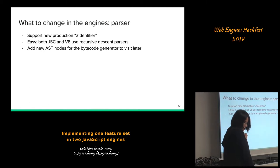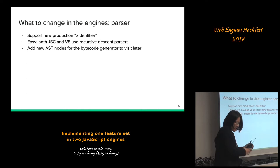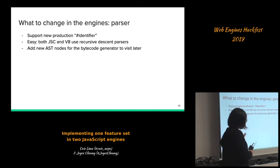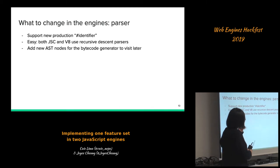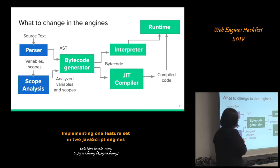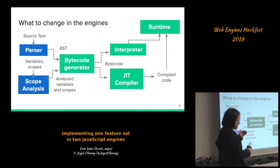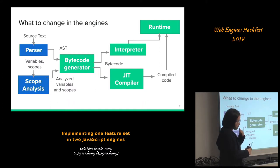To implement the class features, we first need to change the parser to parse these new syntaxes. In particular we need to support the new production 'hash identifier' for private names. That's relatively easy in both JavaScriptCore and V8 because they both use recursive descent parsers — you basically just need to find the correct place to add some code. We also need to add new AST nodes so that the bytecode generator can visit them later.